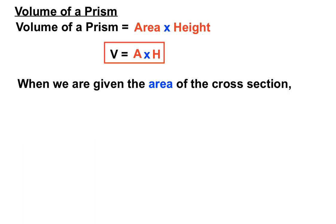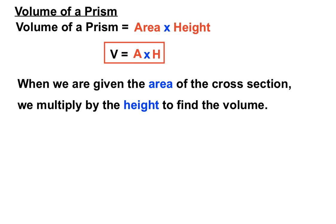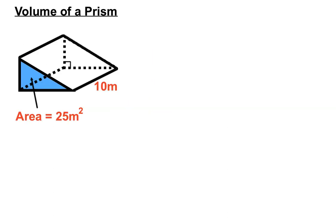The volume of a prism: area times height, or V = A × H. There are two main types of questions: one fairly easy, where you're given the area of the cross-section already, and all you have to do is multiply that area by the height — how far back it goes — to find the volume.